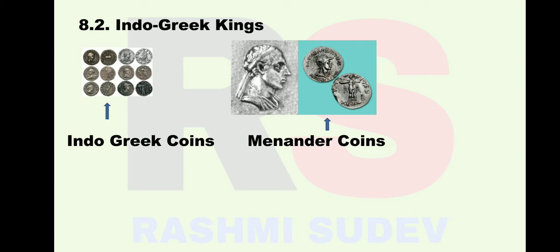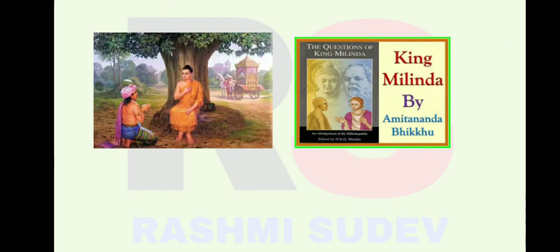The coins of Greek kings had great importance in ancient India. They had a tradition of putting the picture of the king on one side and the deity on the other side. This tradition of making such coins also started in India. The famous Indo-Greek king was Menander, who discussed Buddhist philosophy with Buddhist bhikkhu Nagasena.